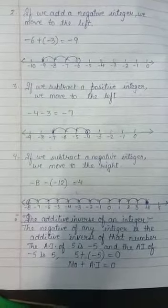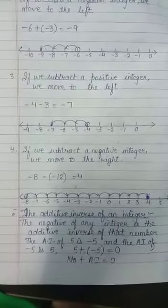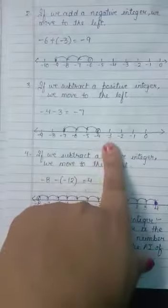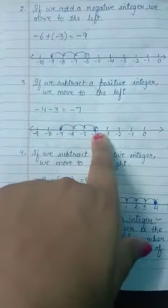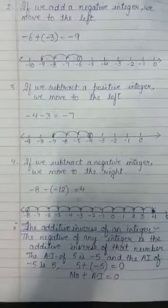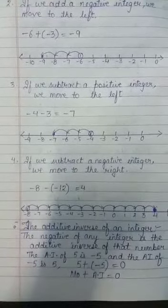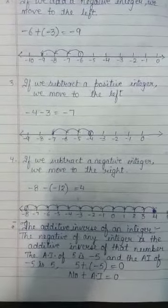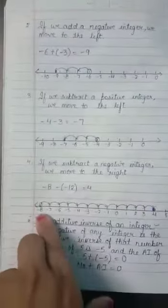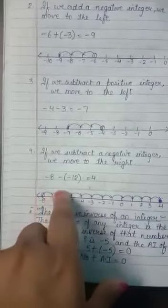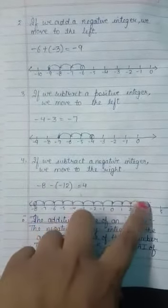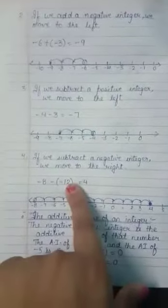If we subtract a positive integer, we also move to the left. For example, minus 4 minus 3: start at minus 4, take 3 jumps left — jump 1, 2, and 3 — we reach minus 7. Last case: if we subtract a negative integer, we move to the right. For example, minus 8 minus minus 12: start at minus 8, take 12 jumps right — we reach 4. So the answer is 4.